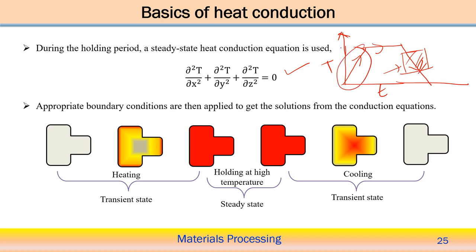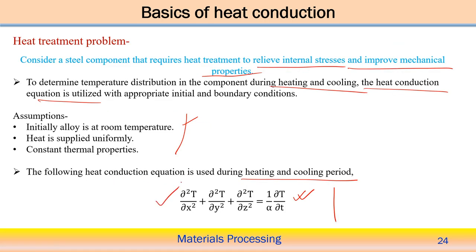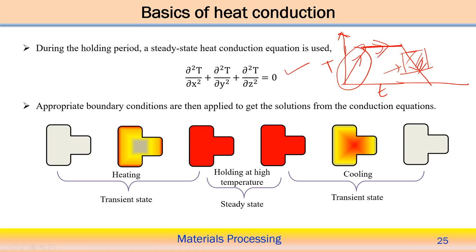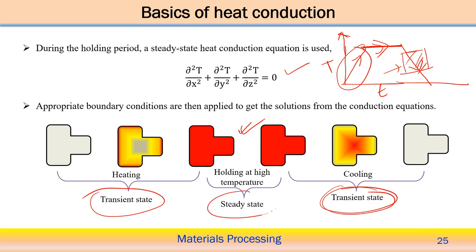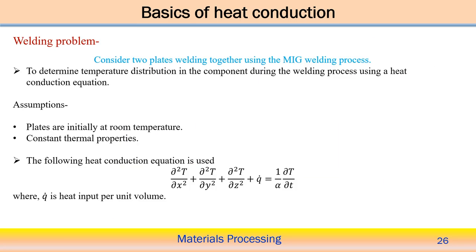This means during the heating and cooling phases, the temperature is varying with respect to time — so the transient heat conduction equation is used in both cases, without any heat generation term. At the holding time, the sample is kept at constant temperature for a longer time — in that case we follow the steady-state equation. So the initial and final stages are transient state, and in between, the holding period uses the steady-state equation. Just by looking at the problem, we determine which form of the equation is applicable.